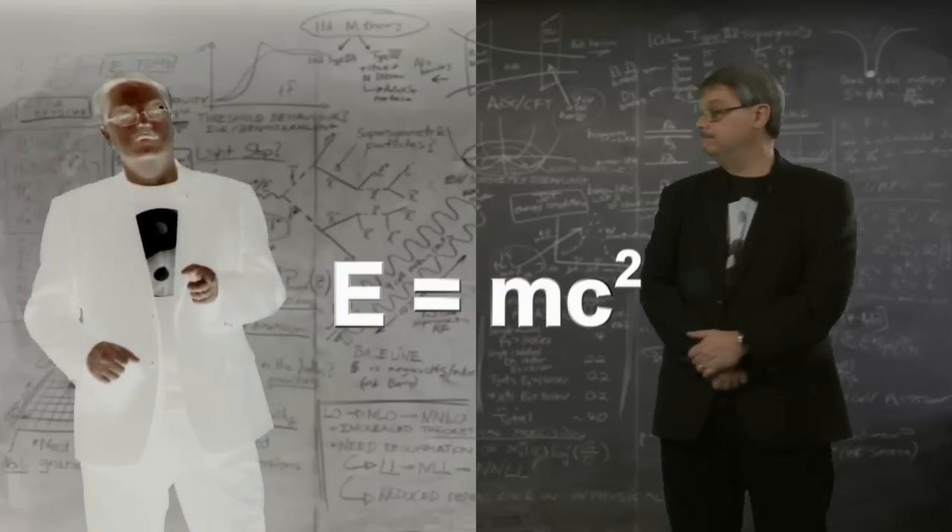Now let's take another look at Einstein's equation. E stands for energy, m stands for mass, but the c squared term is just a number, actually a very big number. In the usual metric system, it is a 9 followed by 16 zeros. This means a little mass is a lot of energy.